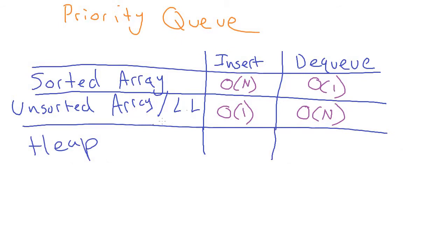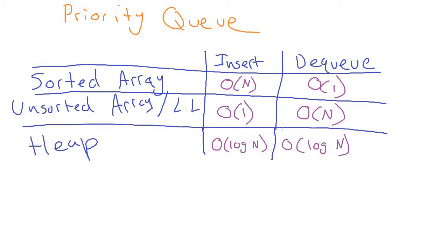The new data structure we're going to talk about today is the heap, which is geared towards solving this problem. It is O(log n) for both insert and dequeue. Just like a binary search tree does really well with inserting and searching, heaps do really well for this problem where we want to insert and then find the biggest one quickly and remove it. That's the goal of heaps.